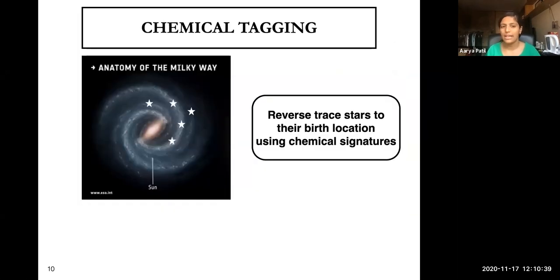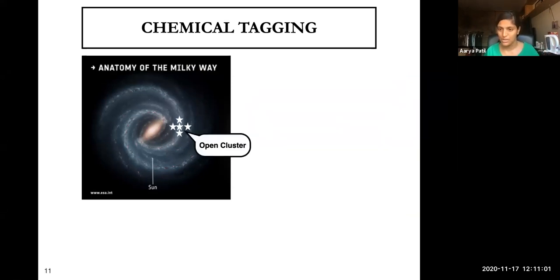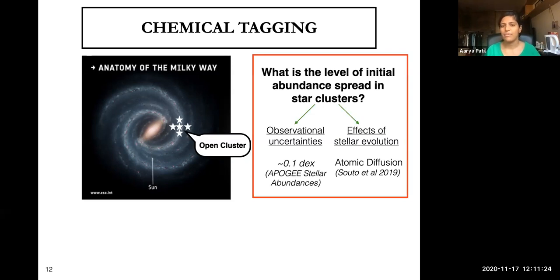The second motivation is chemical tagging. Open clusters disperse over timescales of about 100 million years, and if the chemical signatures are essentially similar, we can reverse-trace stars back to where they formed just by their chemistry. If we can do that, we can go beyond the broad-brush picture of dynamical and chemical evolution of the galaxy and actually trace each and every star to where it was first formed. The actual problem we're solving is to constrain the level of initial abundance spread in star clusters.